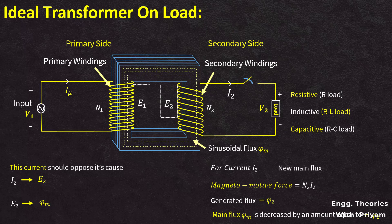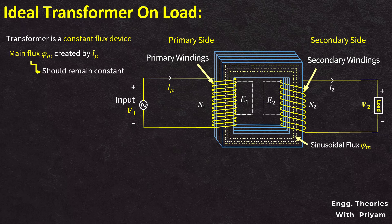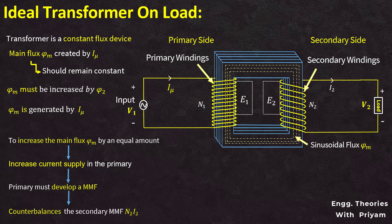So, our new main flux phi m prime is equal to phi m minus phi 2. Now, we know that a transformer is a constant flux device, that's why the main flux phi m generated due to the magnetizing current I mu should remain constant regardless of any change in the load. So, in order to keep this main flux phi m constant, we have to increase the flux phi m by an equal amount to the generated flux phi 2 due to the magnetomotive force N2I2. The main flux phi m is generated by the current flowing in the primary, which is previously equal to the magnetizing current I mu. In order to increase the main flux by an equal amount, we have to increase the current supply in the primary winding; in other words, the primary must develop the magnetomotive force which will exactly counterbalance the secondary magnetomotive force N2I2.